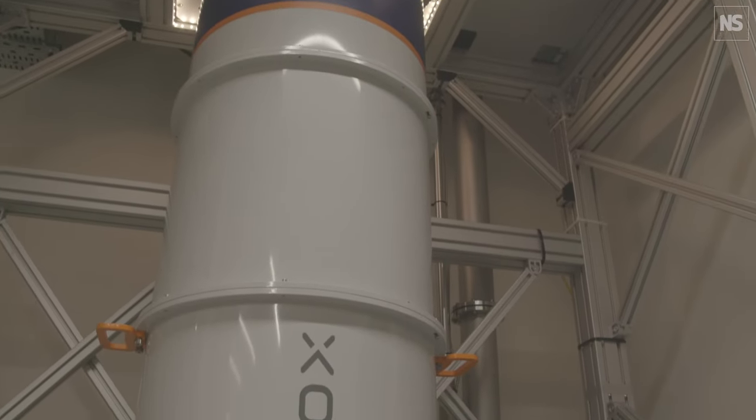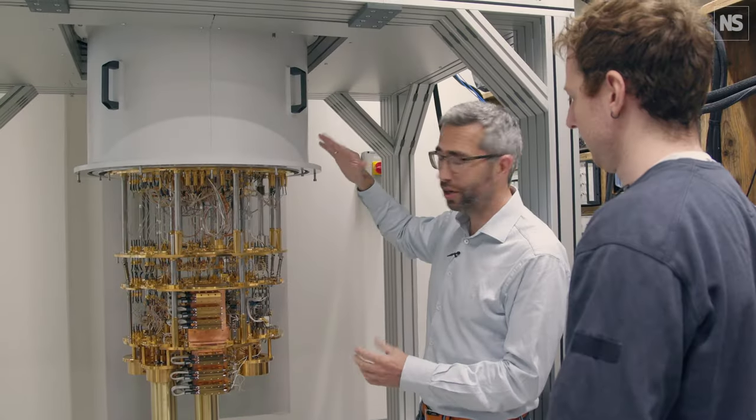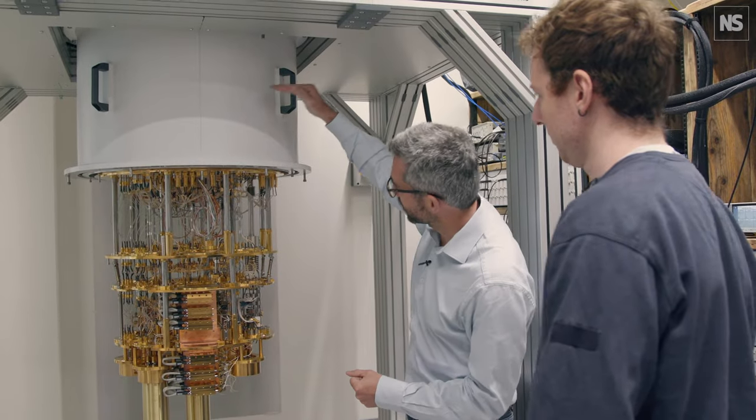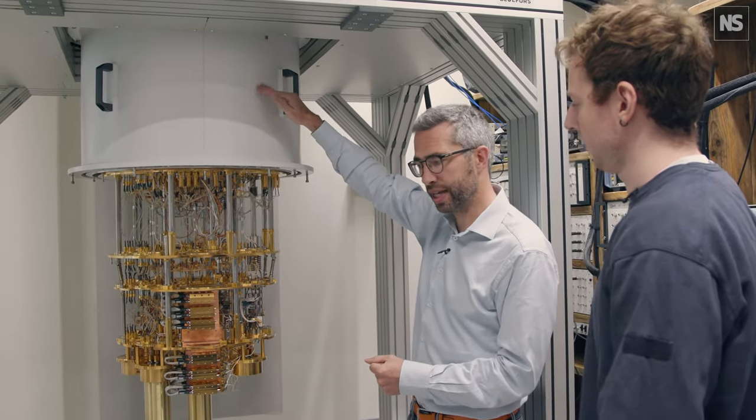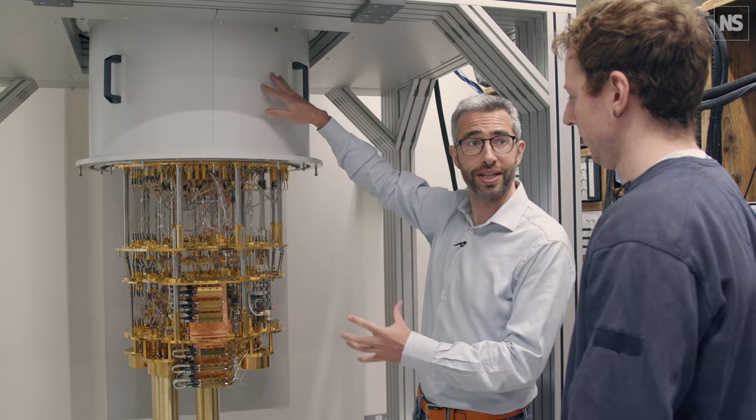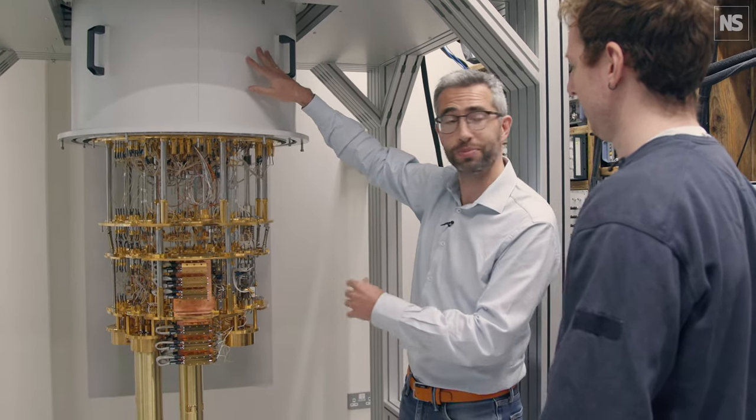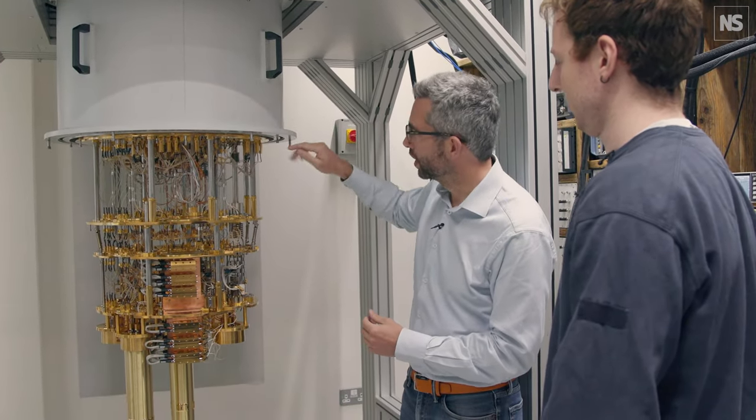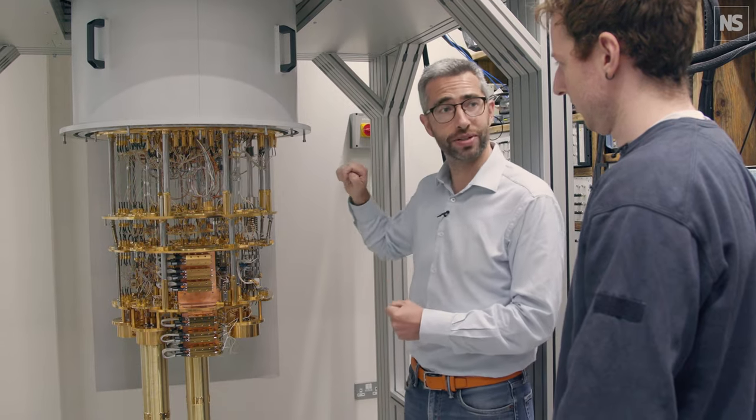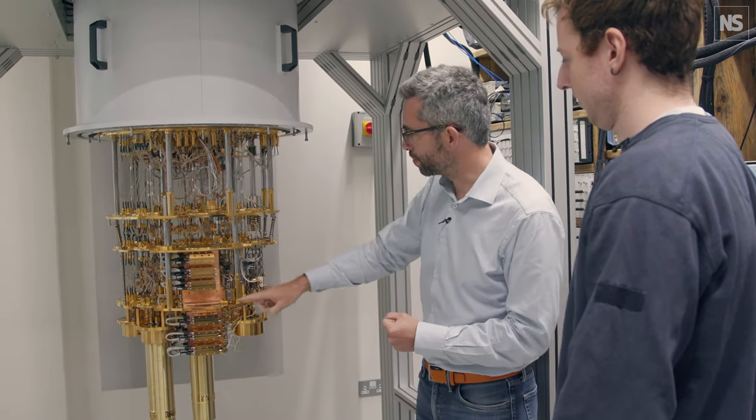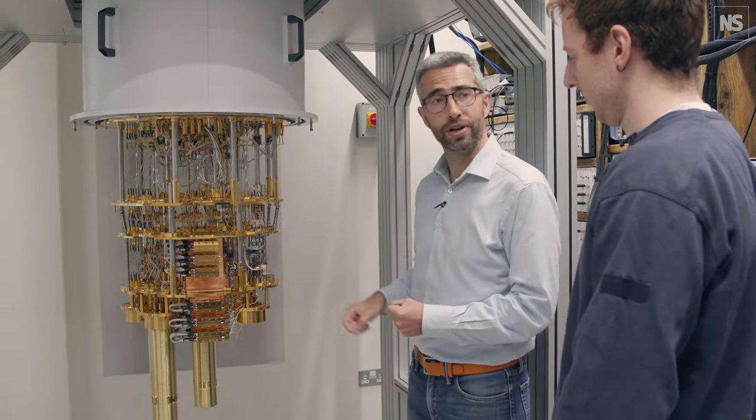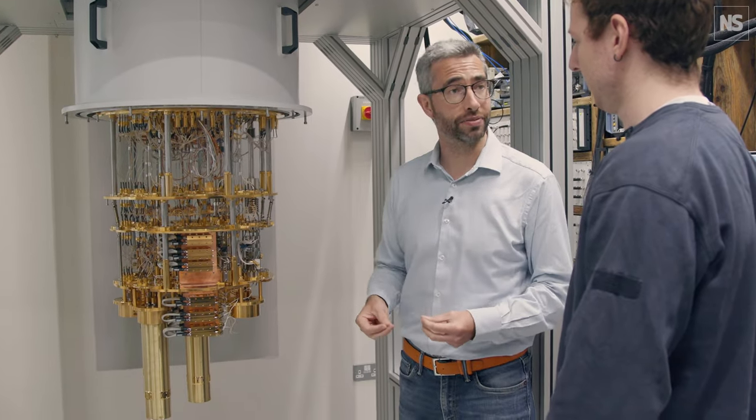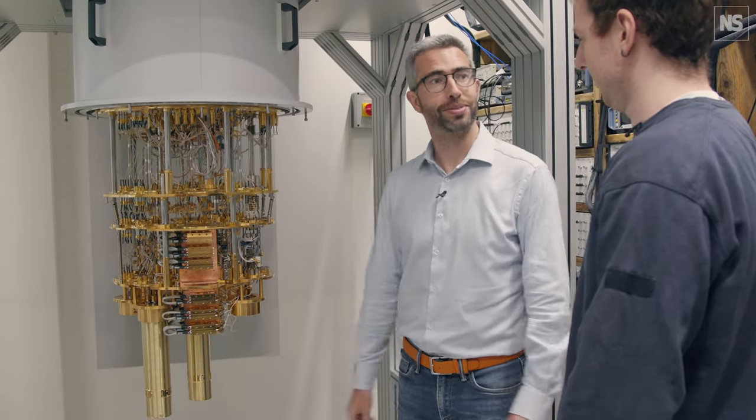This cryostat works in different stages. When it's cold, there's a plate here which is a temperature of one of the planets, further more distant planets in our galaxy. This plate here is about the temperature of deep space. And then this plate here is a hundred times colder than that, about 10 millikelvin or a hundredth of a degree above absolute zero.